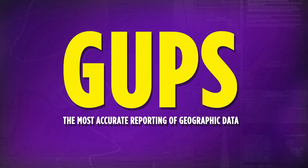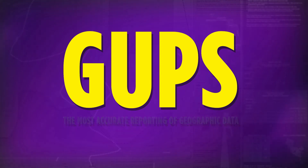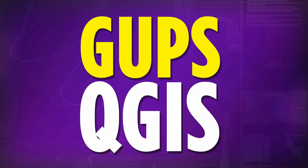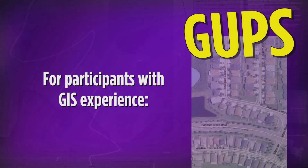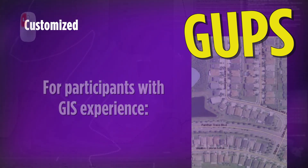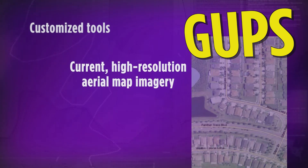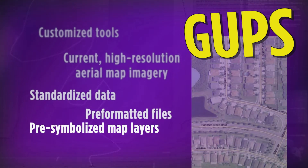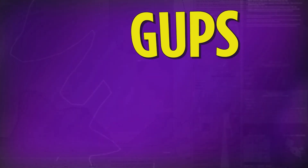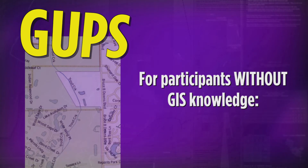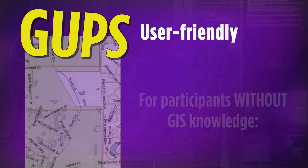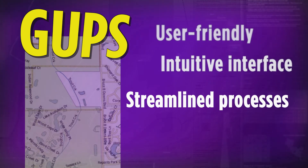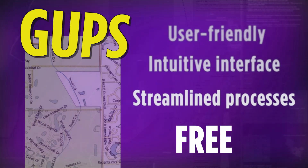To ensure the most accurate reporting of geographic data, the Census Bureau has built GUPS on top of QGIS, a fully functioning geographic information system. Program participants with experience using GIS will appreciate familiar features GUPS offers, such as customized tools, current high-resolution aerial map imagery, standardized data, pre-formatted files and pre-symbolized map layers, and automatic processing. GUPS has also been designed for those without extensive GIS knowledge, and is user-friendly, features an intuitive interface and streamlined processes, and best of all, is free to participants.